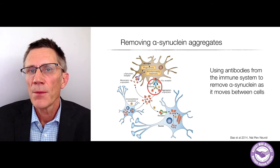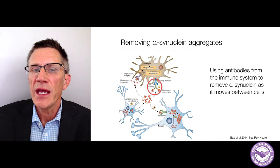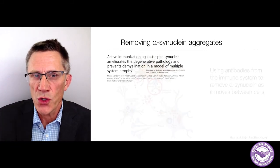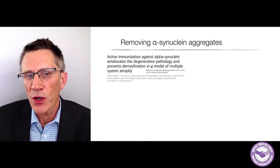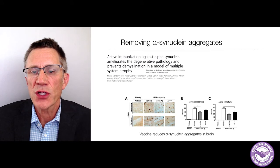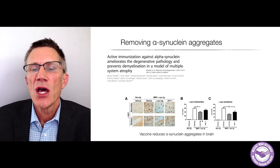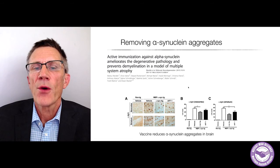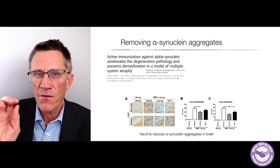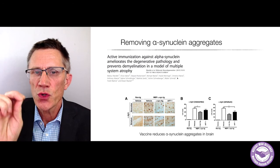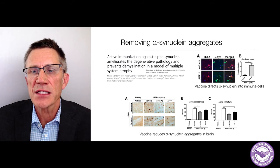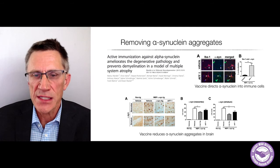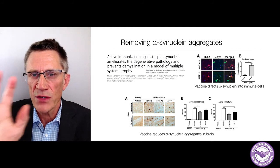The idea is to attack synuclein when it's outside the cell, using antibodies from the immune system. These antibodies direct the synuclein away from nerve or glial cells into microglia — immune cells — using the immune system to do something good. A study published about five years ago showed in an MSA mouse model that one could reduce aggregates by using a vaccination protocol where mice formed antibodies to synuclein.